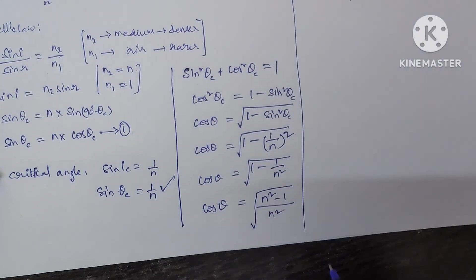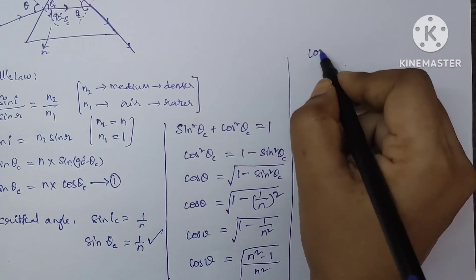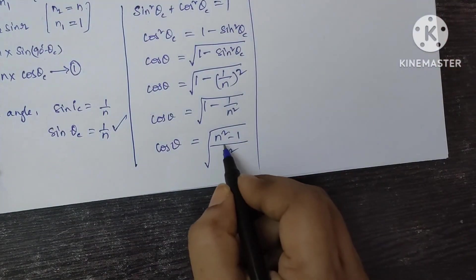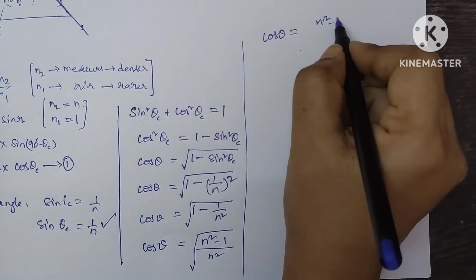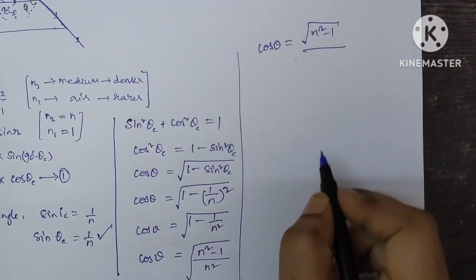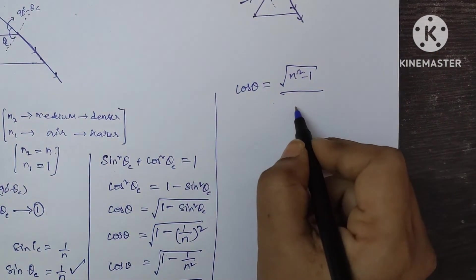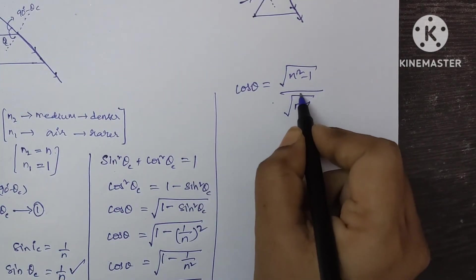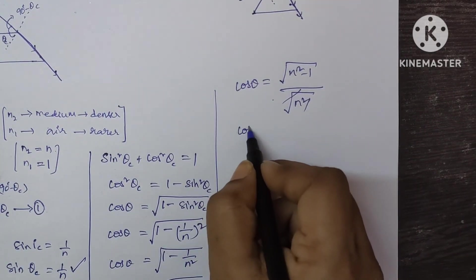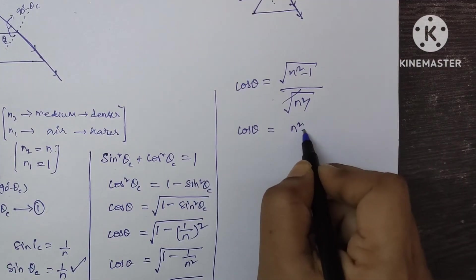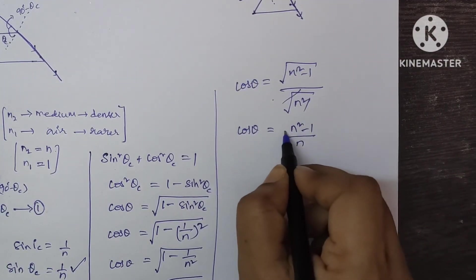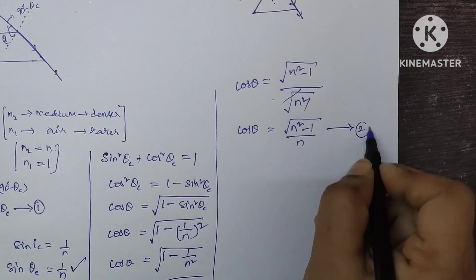Cos theta is equal to 1 minus 1 by N square. Cos theta is equal to N square minus 1 divided by N square. On calculating, we got cos theta is equal to N square minus 1 divided by N square under root. This will get cancelled. Cos theta is equal to N square minus 1 divided by N. Let it be equation number 2.